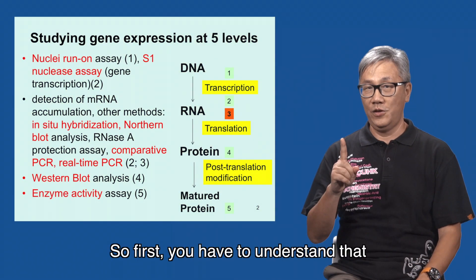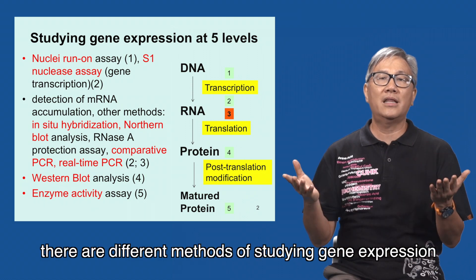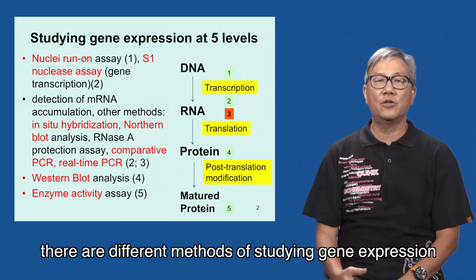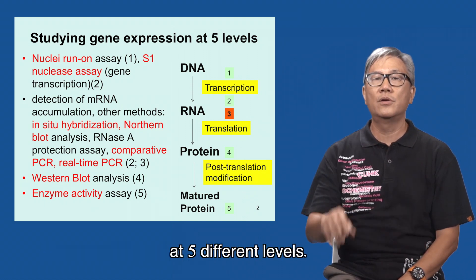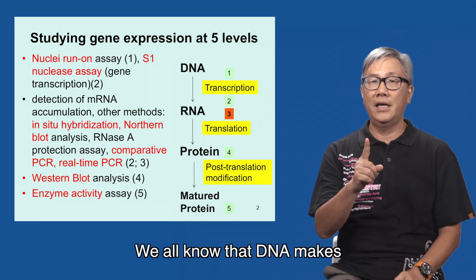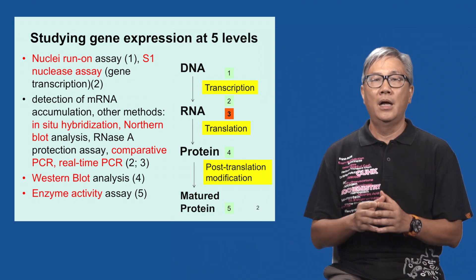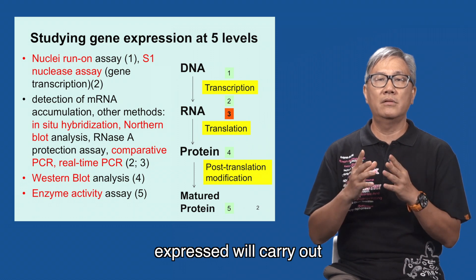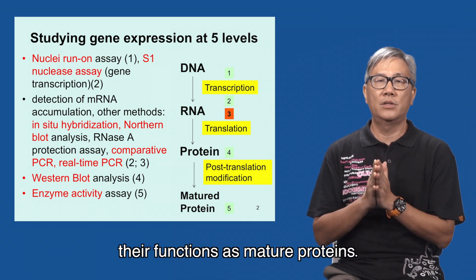First, you have to understand that there are different methods of studying gene expression at five different levels. We all know that DNA makes RNA, which makes protein — expressed proteins carry out their functions as mature proteins.